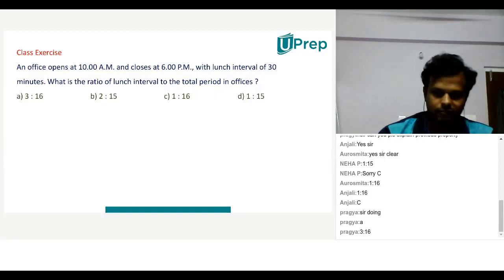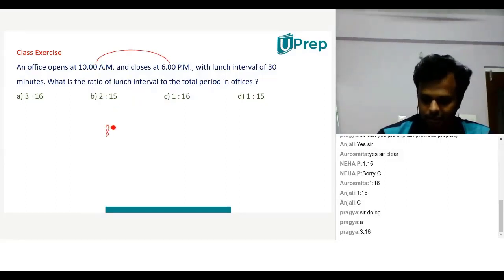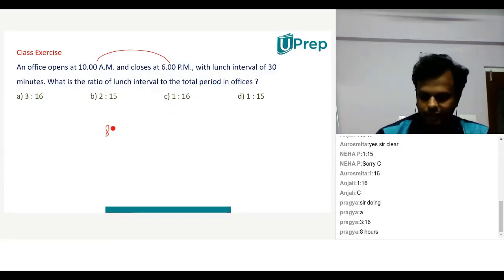So children, here he is asking the ratio of lunch interval to total period in the office. From 10 AM to 6 PM, how many hours is it? Eight hours, isn't it? Eight hours means what? Eight into 60 minutes, because one hour is 60 minutes.